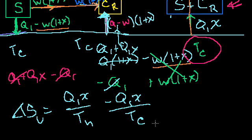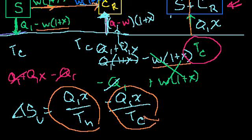The change in entropy of the universe. Well, the hot body is gaining some heat. So it's Q1 times x over the temperature of the hot body. And then the cold body is losing the same amount. So it's minus Q1 times x over the cold body. Now, this is a bigger number. This is a bigger number than this is, right?